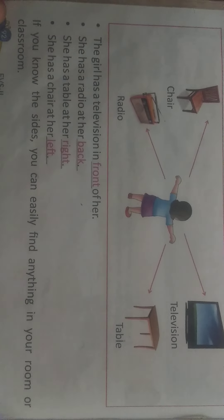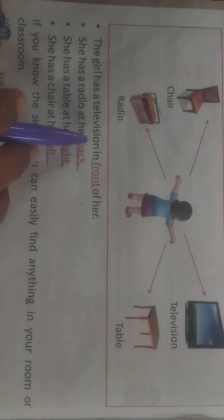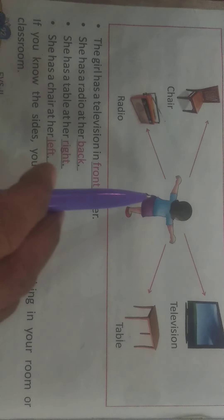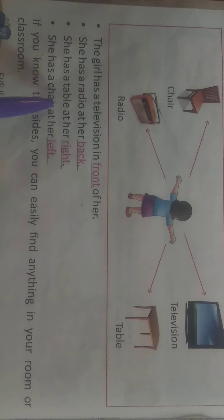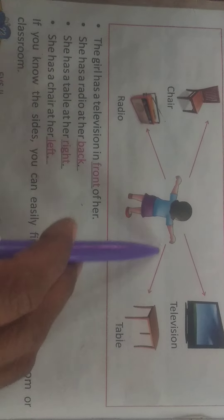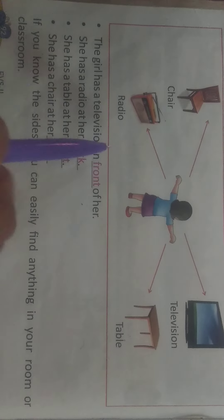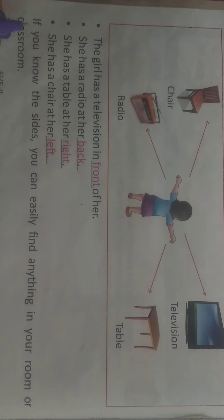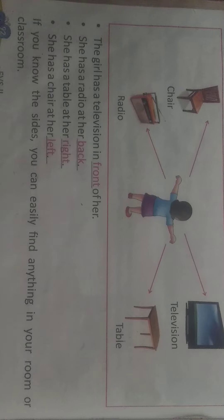The girl has a television in front of her, a radio at her back, a table at her right, and a chair at her left. These are different sides. If you know the sides, you can easily find anything in your classroom or room.